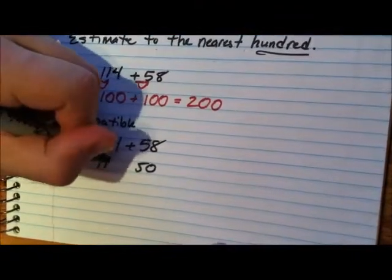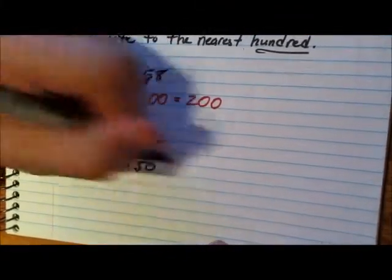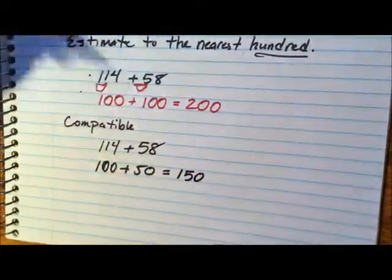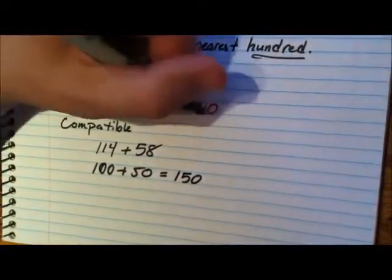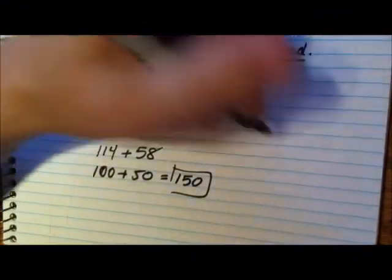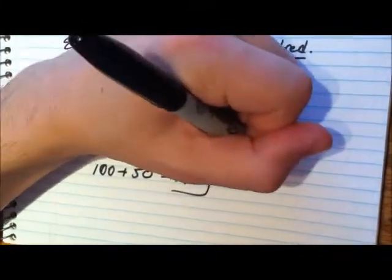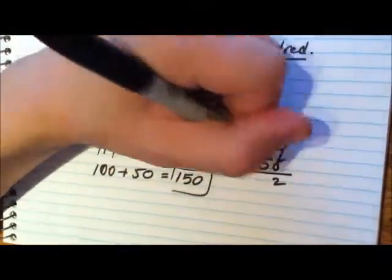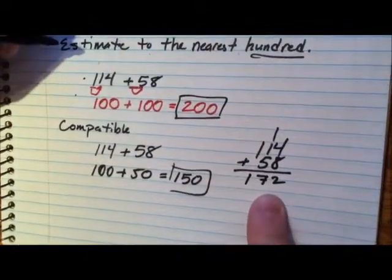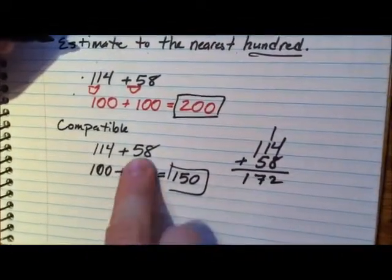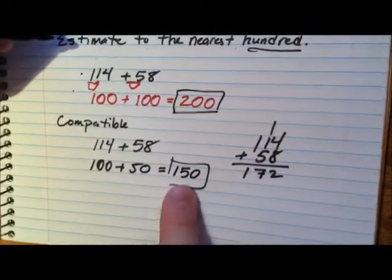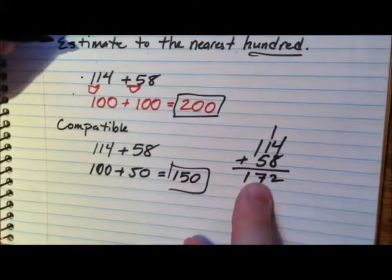So one hundred fourteen can still round to one hundred. Then we add them together and get one hundred fifty as our estimated answer. That's a lot different than two hundred. If you were to work it out, the actual answer is one hundred seventy-two. So rounding fifty-eight to fifty — or even sixty, really — would get you a lot closer answer to the original.